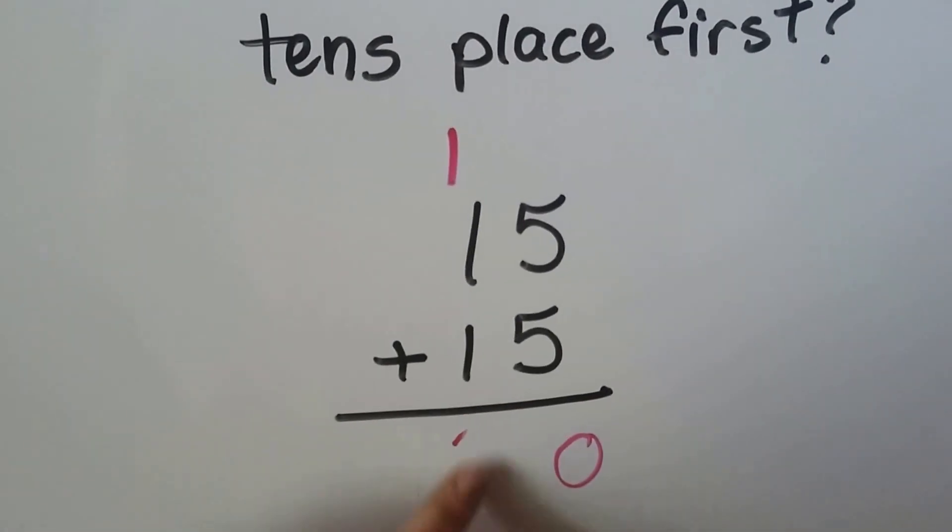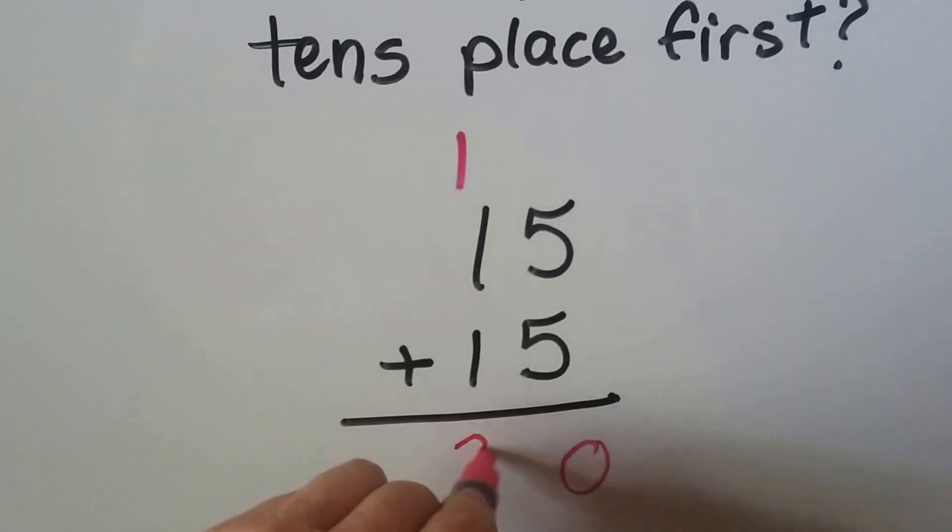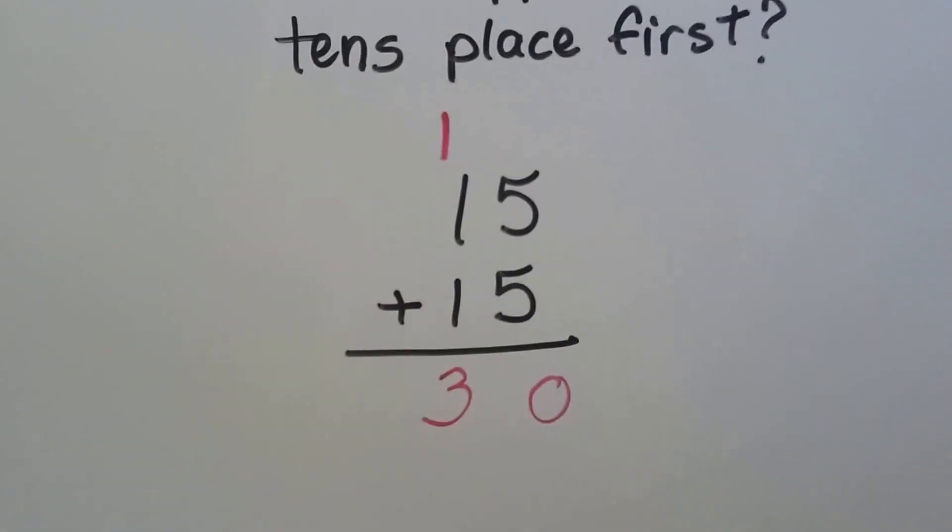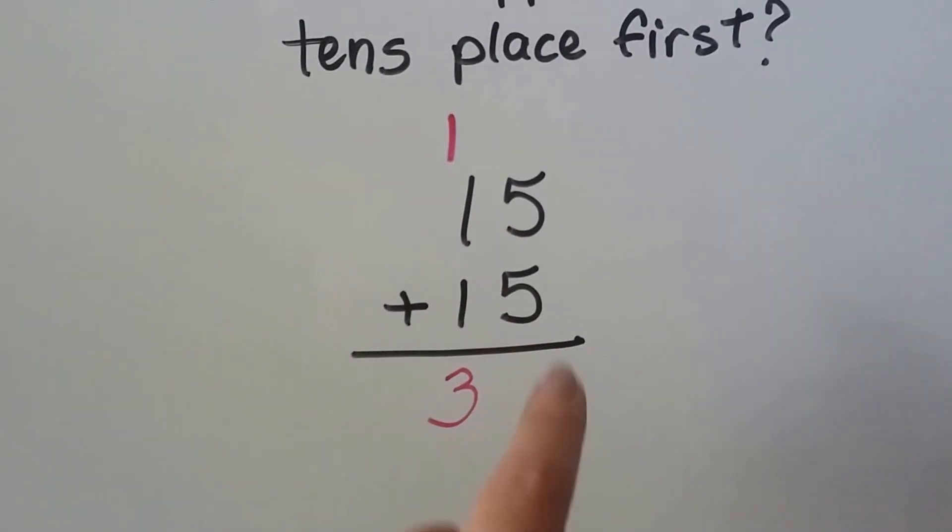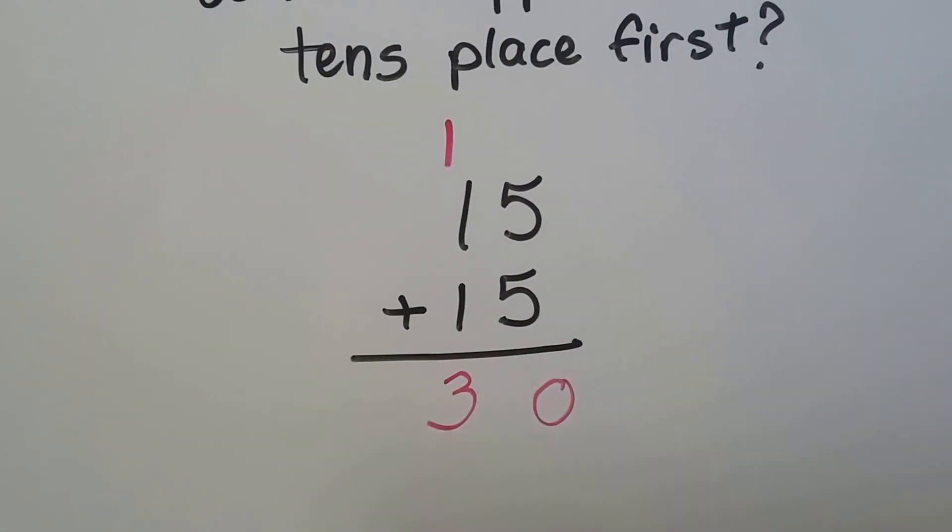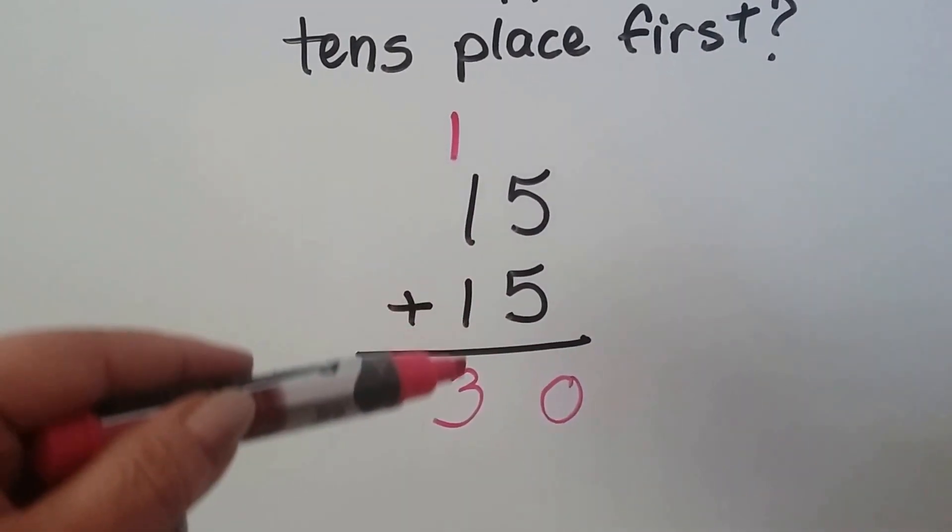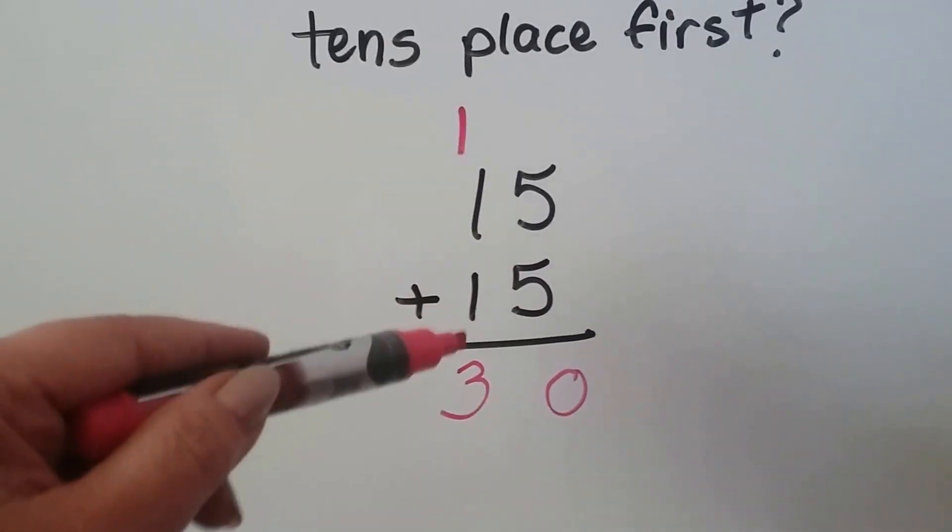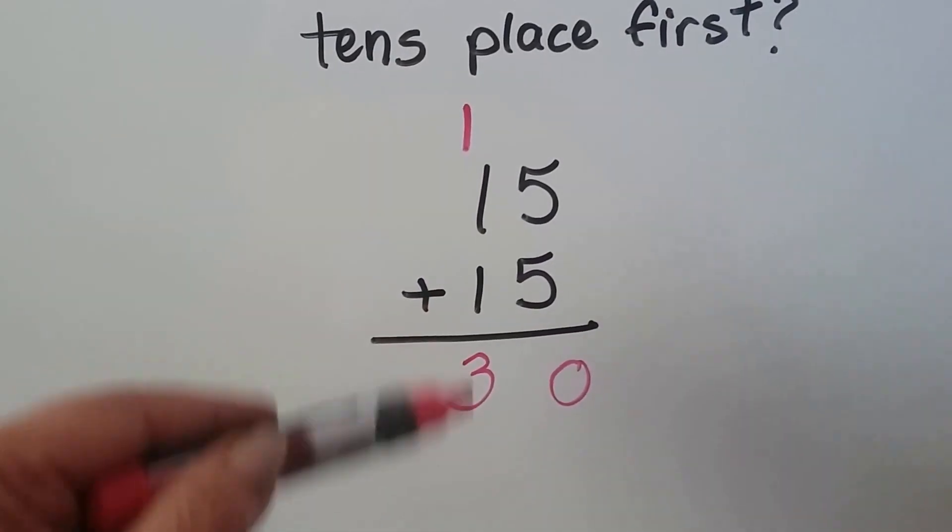So we start with the ones place, just in case it needs to be regrouped. We can add the one we regrouped to the tens place. Then we add the tens place, because then we'll have all the numbers we need to add.